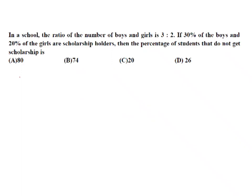In a school, the ratio of the number of boys and girls is 3 is to 2. If 30% of boys and 20% of the girls are scholarship holders, the percentage of students that do not get the scholarship is. When you are adding two groups, we know the formula like N1A1 plus N2A2 by N1 plus N2. First of all, how many of them were scholarship holders?